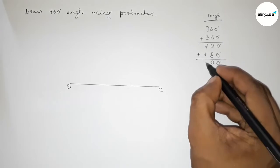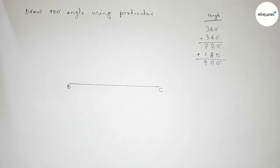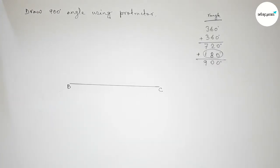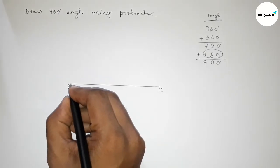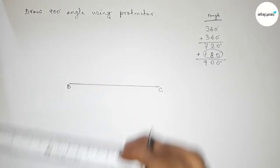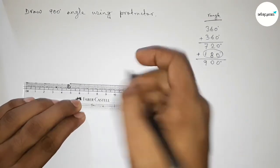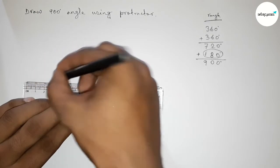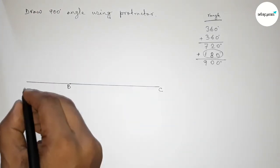So here we have to first draw a 180 degree angle on point B by using a scale, because we know that a straight line is a 180 degree angle. So taking here point A, so this angle is 180 degrees.